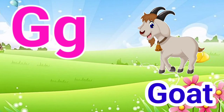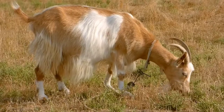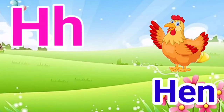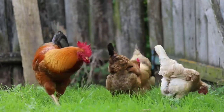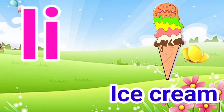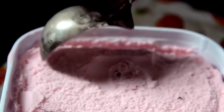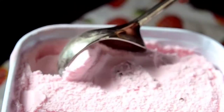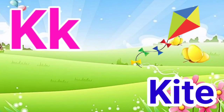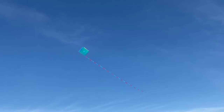G for goat, H for hen, I for ice cream, J for joker, K for kite.